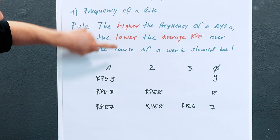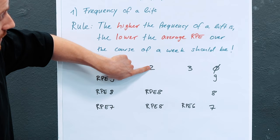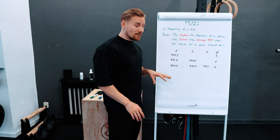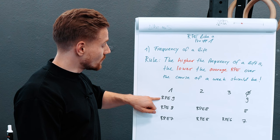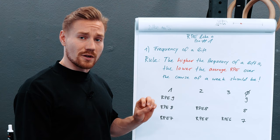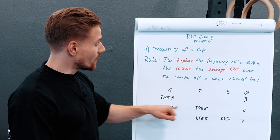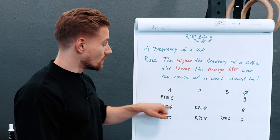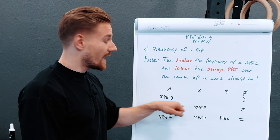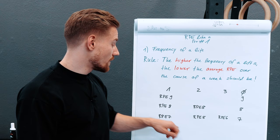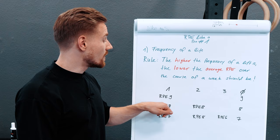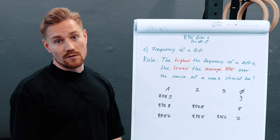Let me give you an example. We have frequency of one, frequency of two, and frequency of three. These are random examples, so don't focus too much on the specific numbers. If I train dips once a week, I can go pretty intense — RPE 9, training very close to failure. If I add that lift a second time per week, I need to make sure neither session is too heavy, since I now have half the time to recover. So RPE 8 and RPE 8, giving an average of 8 over the week, which has a higher probability of ensuring enough recovery for adaptation.